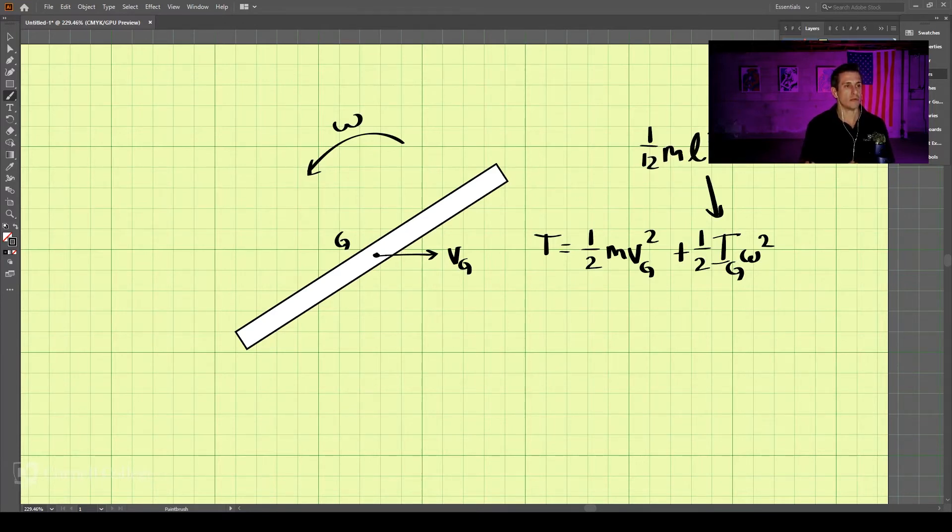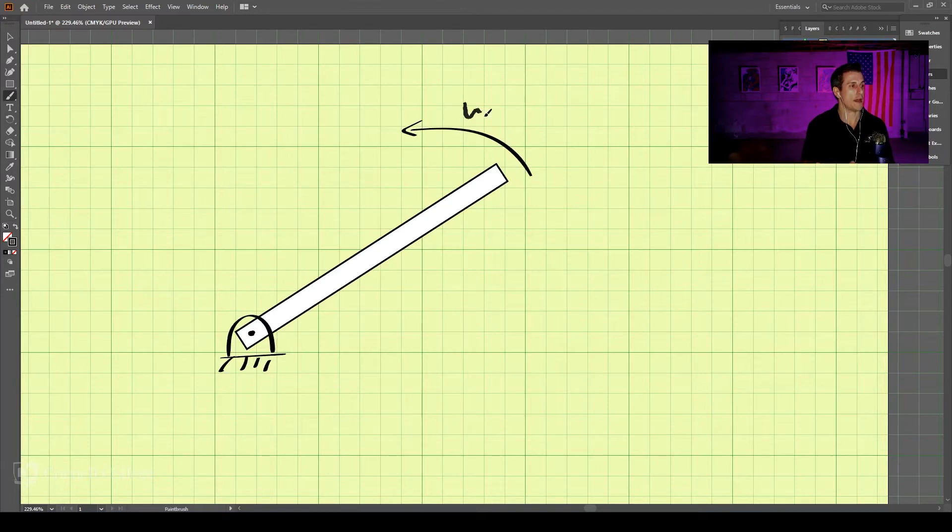Now, let's try a different scenario. What if this was rotating about a fixed point? And we had omega about this point O. So this is rotating about O with an angular velocity of omega.